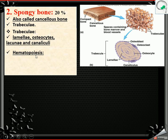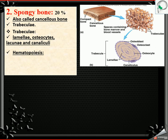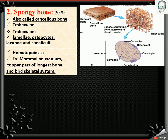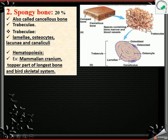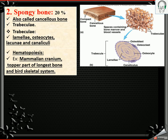Hematopoiesis — what is hematopoiesis? The formation process of blood corpuscles is called hematopoiesis. In spongy bone, the hematopoiesis process occurs. An example of spongy bone is the mammalian cranium. The top part of a long bone and the top part of the bird skeletal system also show spongy bone, with compact bone forming the outer layer.